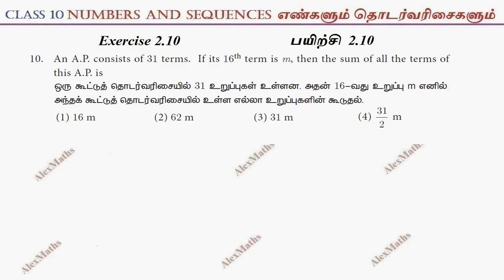Hi students, this is Alex here. Exercise 2.10, question number 10: An AP consists of 31 terms, so n equals 31. If its 16th term is m, that is t16 equals m, find the sum of all the terms of the AP.